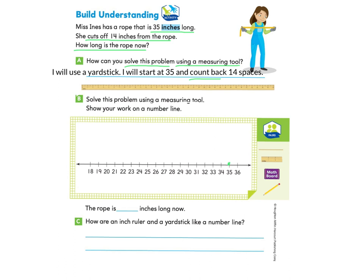We're going to count backwards 14 spaces because that's how many inches of the rope was cut. So we can count 14 by ones, or we can also use numbers we're comfortable with that add up to 14. So I'm going to go from 35 to 30. I know this is a jump of five spaces. I'm going backwards five.